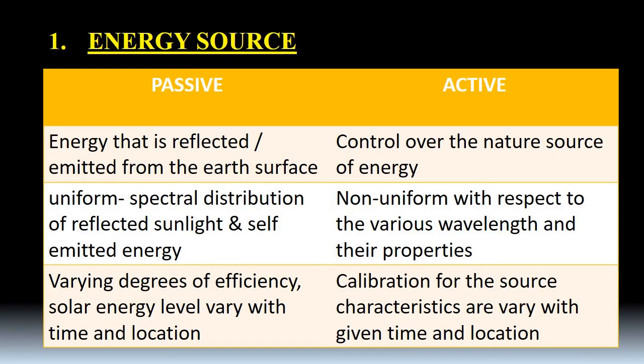The first one is all about the energy source. We have classified the energy source into passive and active. That means the energy that is reflected or emitted from the earth surface, and active, that is the control over the nature surface of the energy. Uniform spectral distribution of reflected sunlight and self-emitted energy is used in passive, and it has non-uniform with respect to the various wavelengths and their properties.